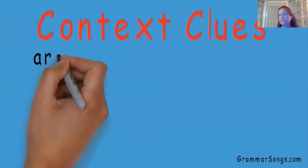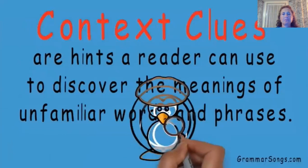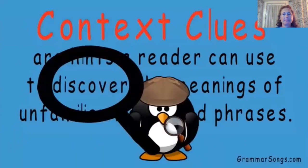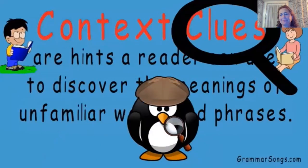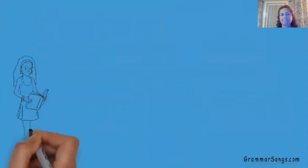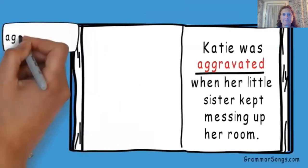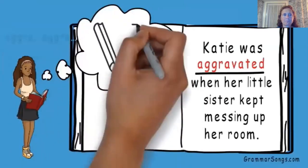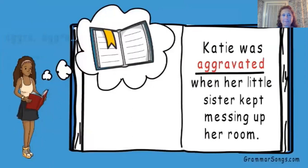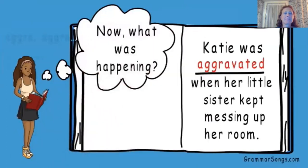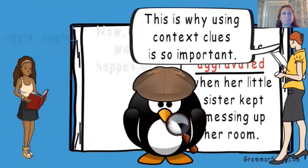Context clues are hints a reader can use to discover the meanings of unfamiliar words and phrases. When we read, we have to look for clues to discover the meanings of words we don't know. Sometimes we will come upon an unfamiliar word we don't know and have trouble sounding out. We could choose to stop and find a dictionary, but this can take away from our comprehension by interrupting the flow. This is why using context clues is so important.